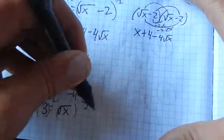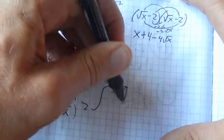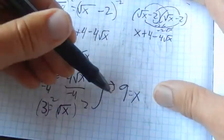Okay, square both sides. 3 squared is 9, square root of x squared is x. So I got 9 as my answer.